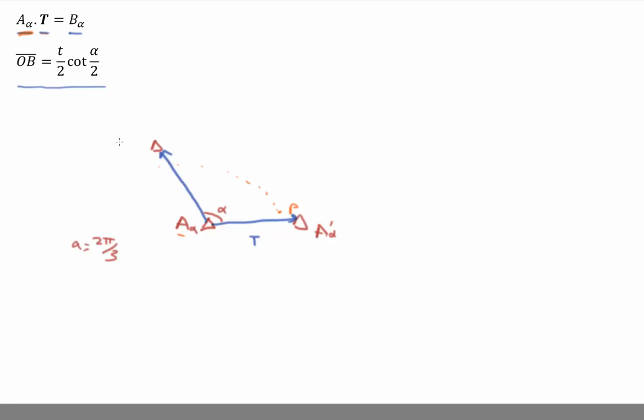That rotates 2π over 3 up to this position. I'll call this p prime. And then we're going to translate that new position by the translation vector, and it is going to map roughly over here. And I'll call that p double prime.